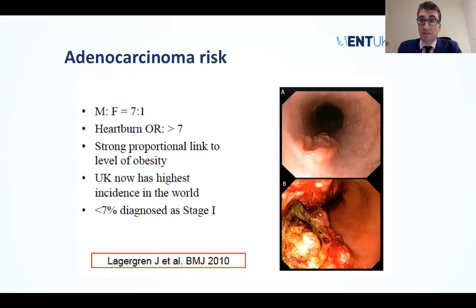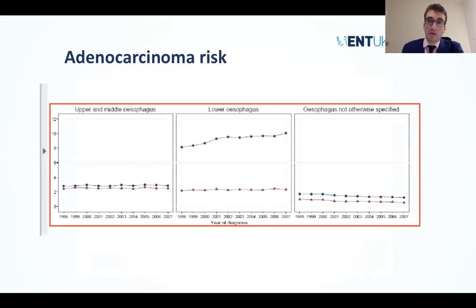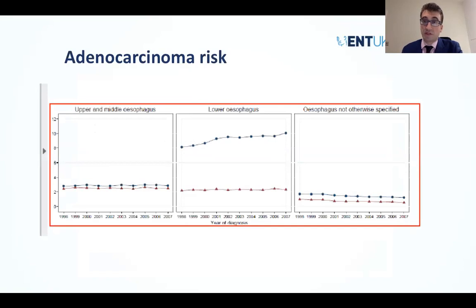Adenocarcinoma affects the lower third of the esophagus and is the histological type showing a rise over the years, as opposed to squamous cell carcinoma in the more proximal esophagus. Cancer Research UK data shows age is a strong risk factor — with increasing age the incidence rate is higher. About half of esophageal cancers are distal-third adenocarcinomas, as opposed to SCC which commonly presents in the upper and middle thirds.